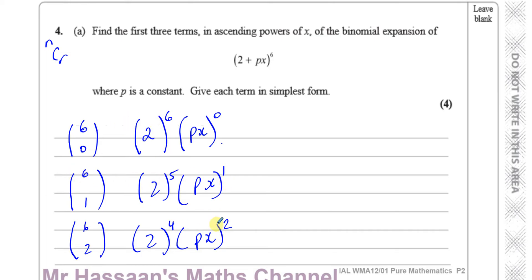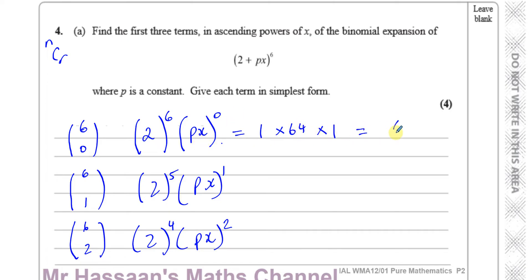Note that the two powers always add up to give you 6: 0 plus 6, 1 plus 5, 2 plus 4. The power on the Px bracket is always the same as the lower number in NCR. So for the first term, 6C0 is 1, 2 to the power of 6 is 64, and anything to the power of 0 is 1. So the first term is 64.